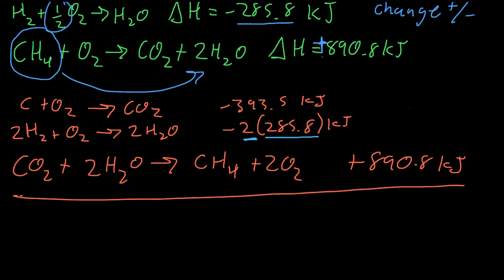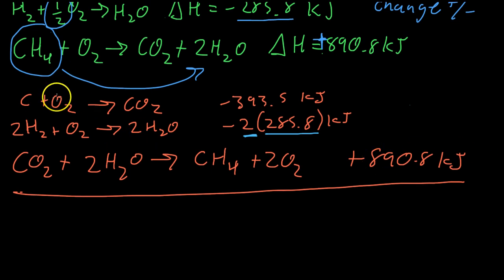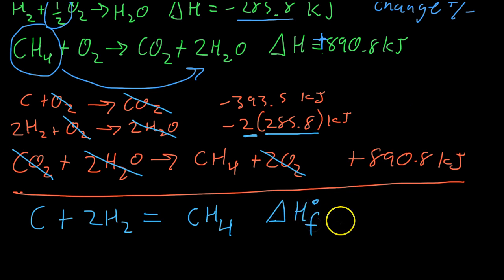So if you see, we have two O2s over here, and we can cross those out with O2 over there on the product side. We have a CO2 over here, and a CO2 over here we can eliminate. And finally, we have 2H2O on the left and 2H2O on the right. And from here, it's just a matter of rewriting what we have left for the desired reaction, and adding up the total energy that's over on this side. So the delta H in standard form of formation ends up being negative 74.3 kilojoules for methane.